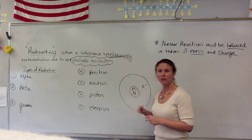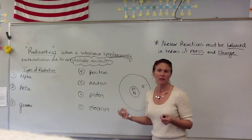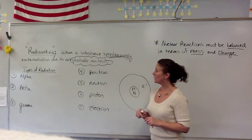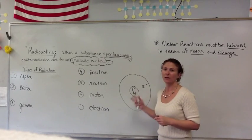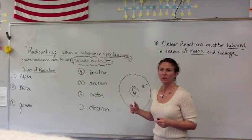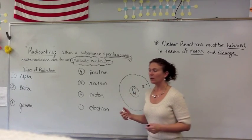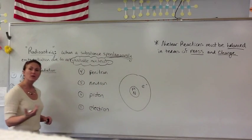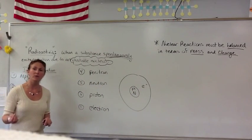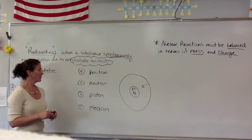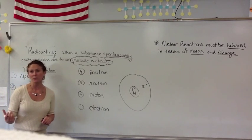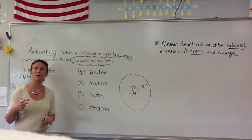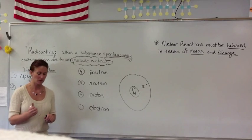When a nucleus actually undergoes any type of decay to form a more stable element, the nucleus is actually changing. It does it spontaneously — it wants to become something more stable, and many times it's going to emit a form of radiation. We need to be familiar with some forms of radiation and what their symbols are before we can write the nuclear equations that go along with this.